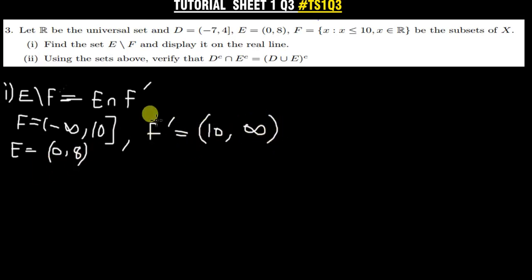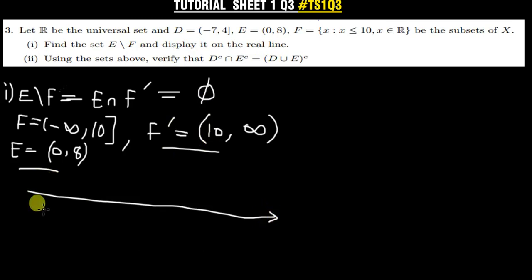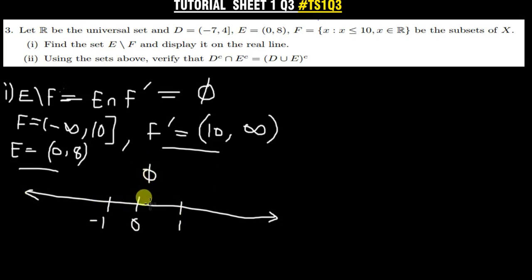Now we find E intersection F complement. E is [0, 8] and F complement is (10, +∞). Looking at these two sets, E goes from 0 to 8 and F complement starts from 10, so there is no intersection. Hence the result is an empty set. To display the empty set on the real line, we just draw the real line without indicating anything on it.